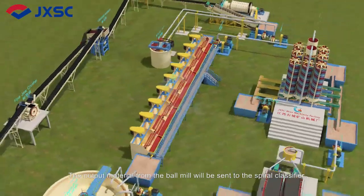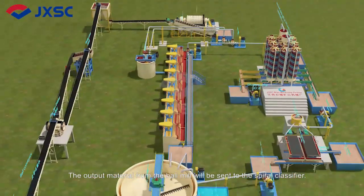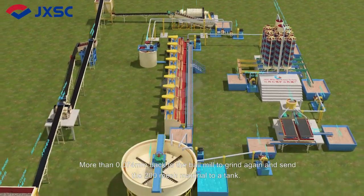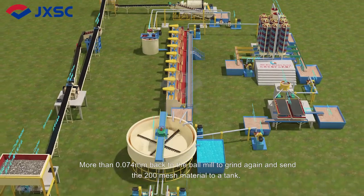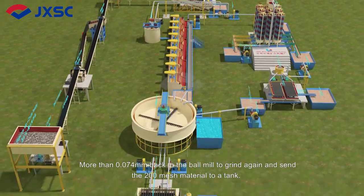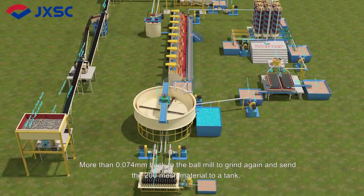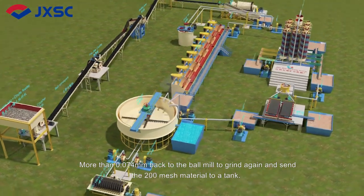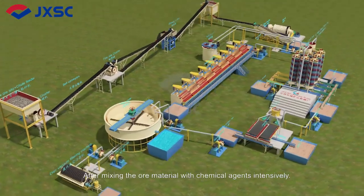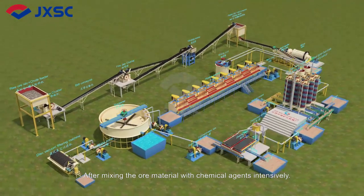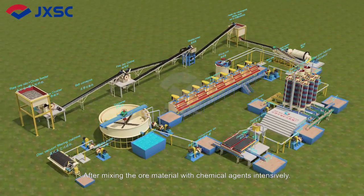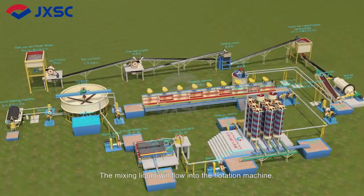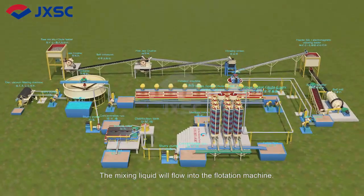The output from the ball mill is sent to a spiral classifier. Material coarser than 0.074 mm is returned to the ball mill to grind again, and the 200-mesh material is sent to a mixing tank. After mixing the ore material with chemical agents intensively, the mixing liquid flows into the flotation machine.